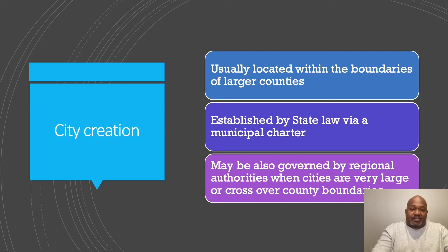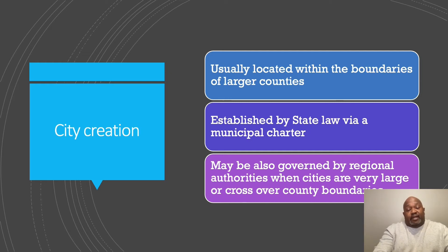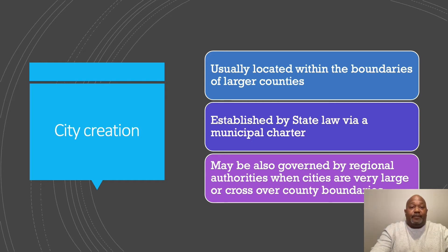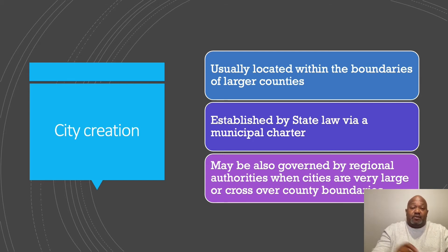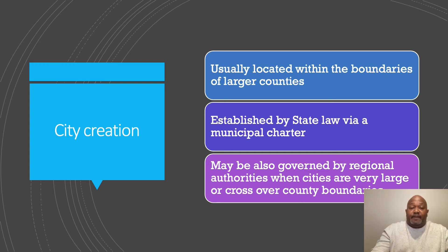Cities are usually located within the boundaries of larger counties. For example, Atlanta is mostly in Fulton County but crosses over into DeKalb County and Cobb County. Because Atlanta is such a big city and crosses over several counties, that means there are certain regional authorities that have to coordinate services over those different boundaries. Counties are political bodies designated by the state with their own leaders, so when a city crosses over county lines, you need a way to unify operations.